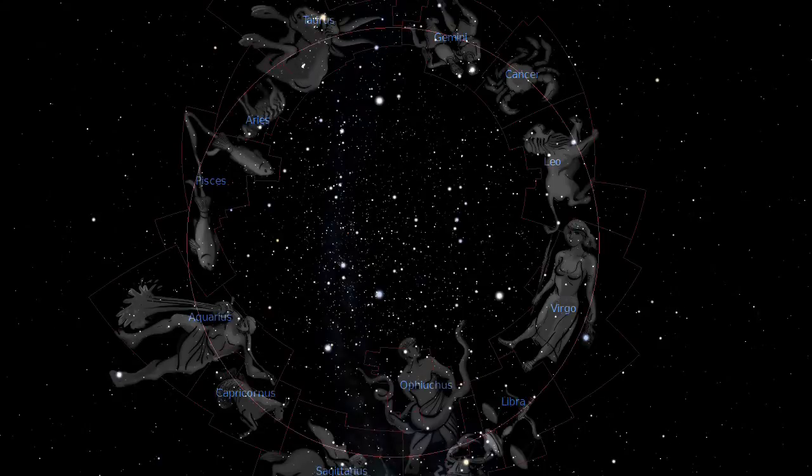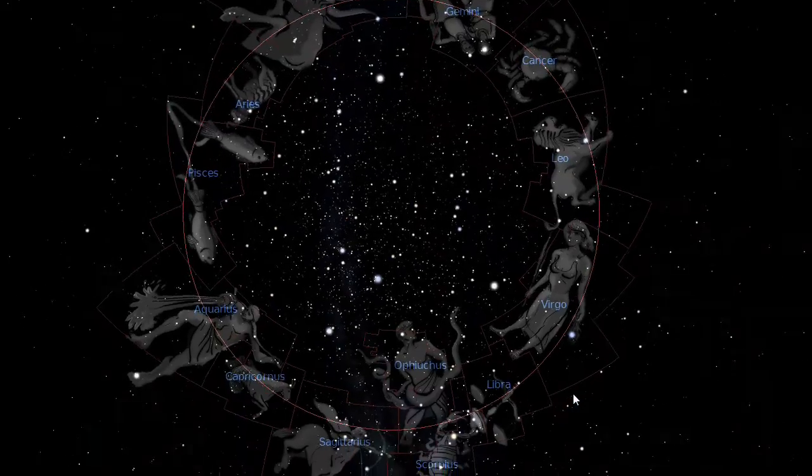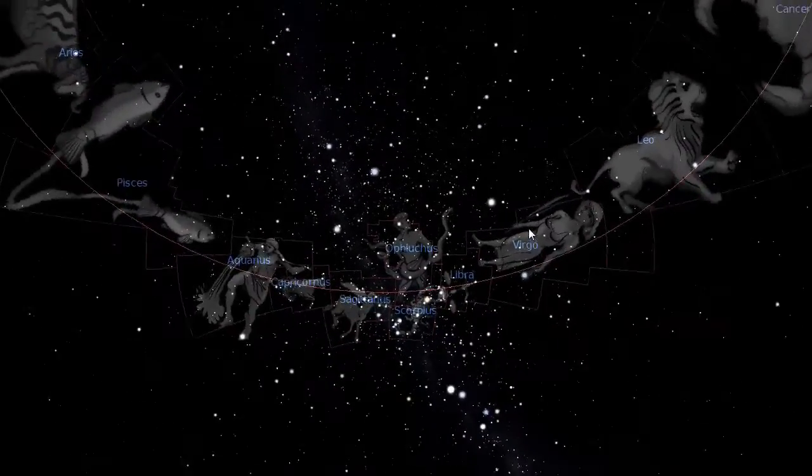It passes through 12 constellations, collectively called the zodiac. These are Aries, Taurus, Gemini, Cancer, Leo, Virgo, Libra, Scorpius, Sagittarius, Capricorn, Aquarius, and Pisces.